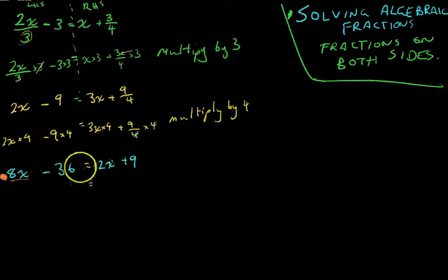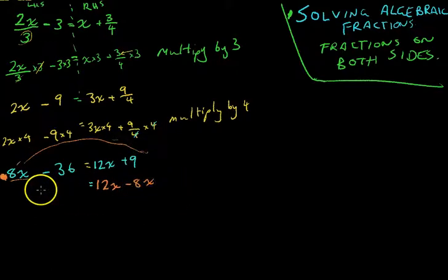We need to group our x terms on one side. I'm going to move all my x terms to the right. 12x. This 8x is going to move from here to here and become a negative 8x. And we've got negative 36 on this side. We're going to move this plus 9 to there and it becomes minus 9.